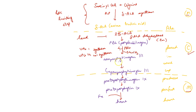The next step is conversion of uroporphyrinogen 3 to coproporphyrinogen 3. This occurs via a decarboxylation reaction, in the presence of enzyme uroporphyrinogen decarboxylase.